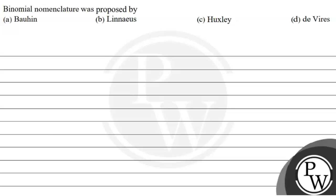Hello, let's see the question. The question says binomial nomenclature was proposed by — first option is Boheen, second option is Linnaeus, third option is Huxley, and fourth option is De Vries.